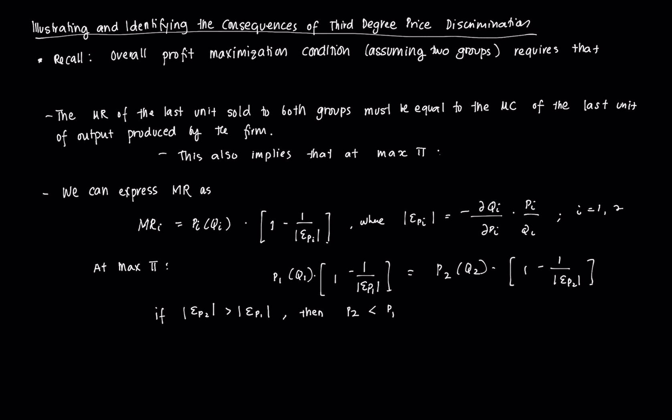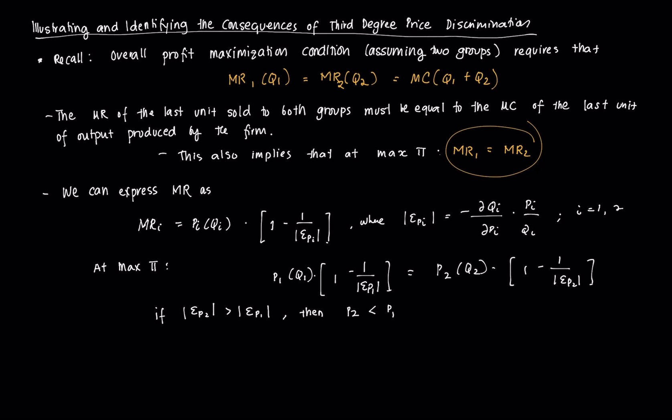If you recall from the last video, we said that the overall profit maximization condition — assuming that the monopolist segments its markets into two groups — requires that the marginal revenue from group one should equal the marginal revenue from group two, and that both equal the marginal cost of production, which is a function of total output (Q1 plus Q2). The marginal cost is the same regardless of whether the monopolist supplies to group one or group two. This condition implies MR1 = MR2 at maximum profit.